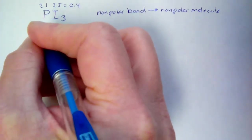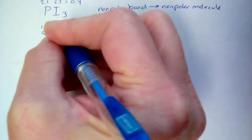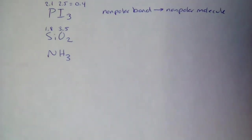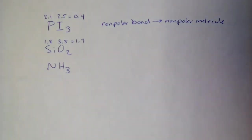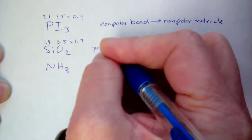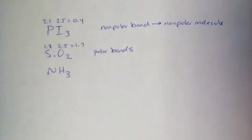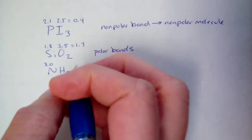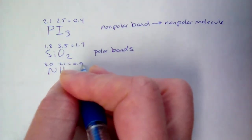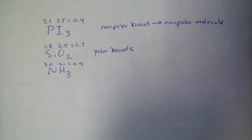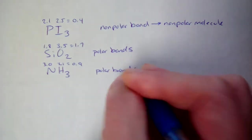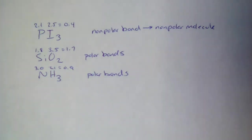Silicon is 1.8, oxygen is 3.5 — a difference of 1.7, which falls into the polar range, so we know we have polar bonds in SiO2 and have to work further. For ammonia: nitrogen is 3.0, hydrogen is 2.1, for a difference of 0.9. The polar range is 0.5 to 2.0, so this is also in the polar range — we do have polar bonds and need to do more work with that one as well.